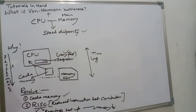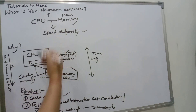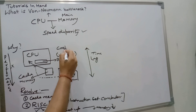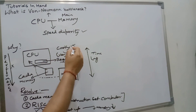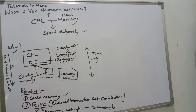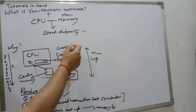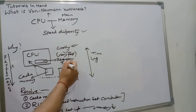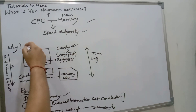You might ask: if registers are so fast, why don't we use a lot of registers to enhance performance? The reason is that registers are very fast but also very costly. If a system uses too many registers, its cost increases significantly, making it unaffordable for most people. Such a system would not be pocket-friendly, which is why extensive use of registers in everyday computers is not practical.